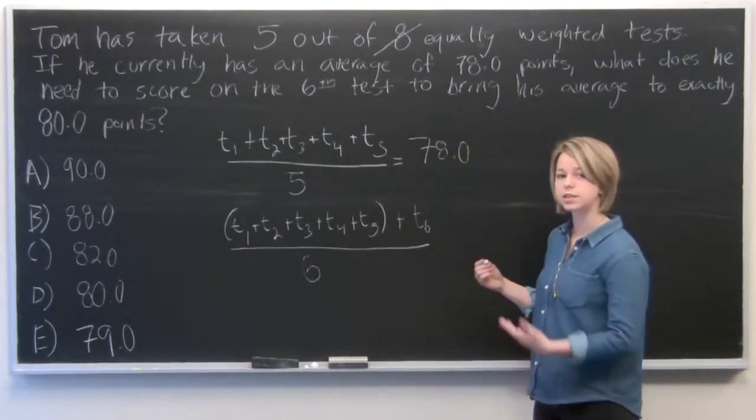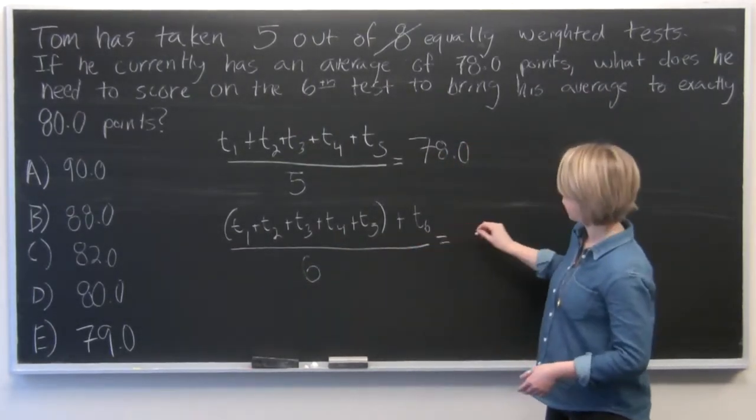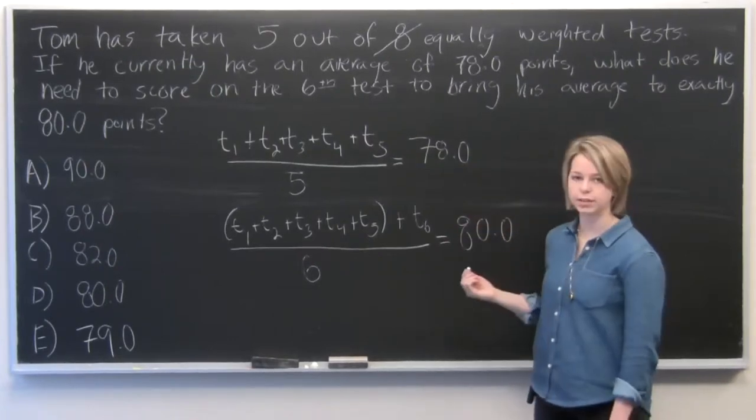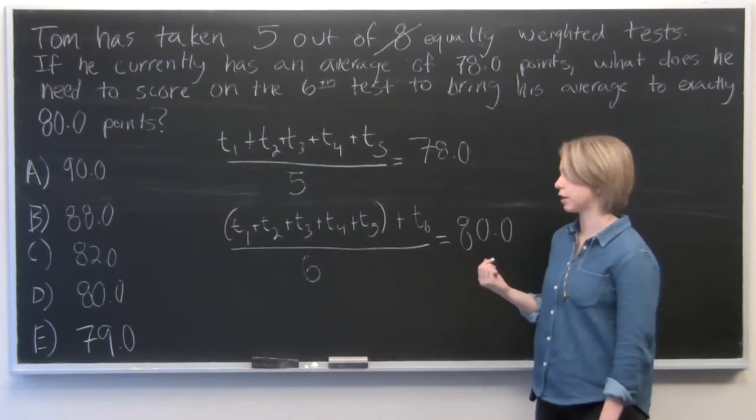So divide all of the sum by six. And we're going to set that equal to 80 points because that's the average that we're looking for in the end.